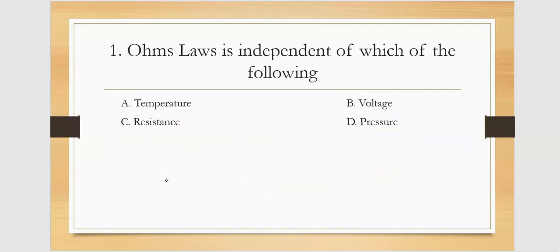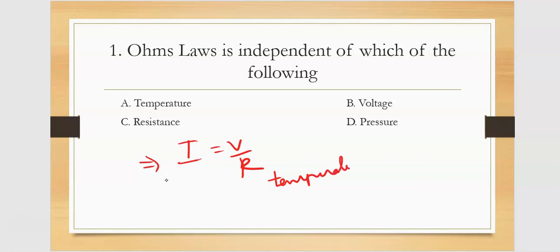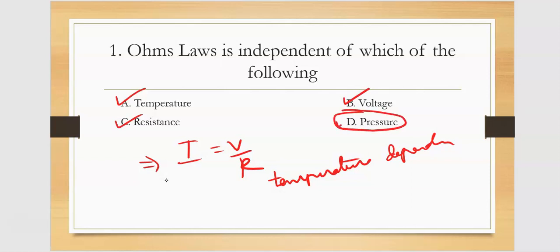Ohm's law is independent of which of the following? Ohm's law states I equals V by R. With respect to temperature dependency — I is dependent on resistance and I is also dependent on voltage. The answer is pressure. Ohm's law is independent of pressure, so only pressure is the right answer.